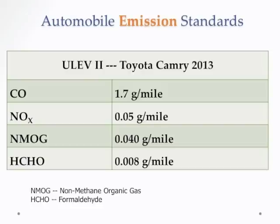After monitoring shows that a site is not in compliance with the National Ambient Air Quality Standard, emissions from stationary and mobile sources must be reduced. With automobiles, emission standards are therefore set — for example, for a new Camry, the emission standards shown in this table specify the grams of pollutants that can be emitted per mile.